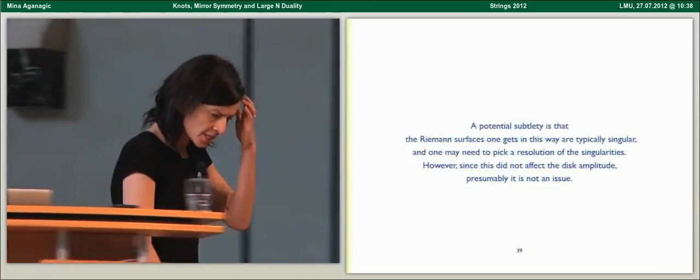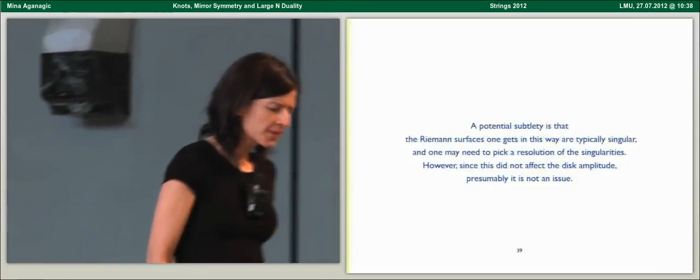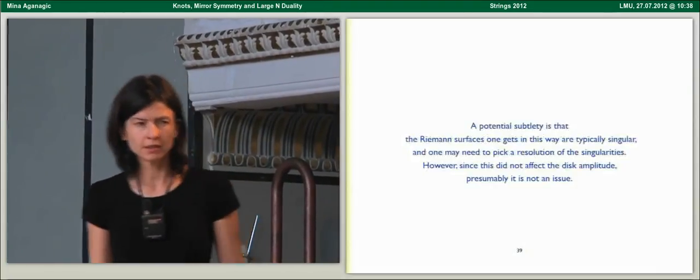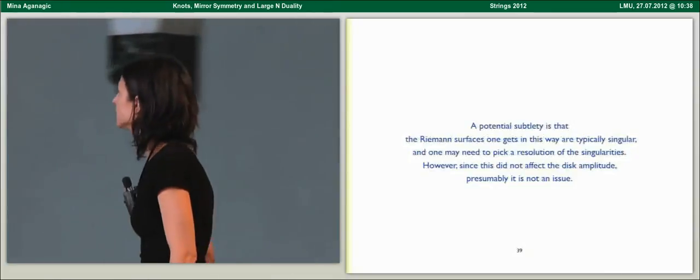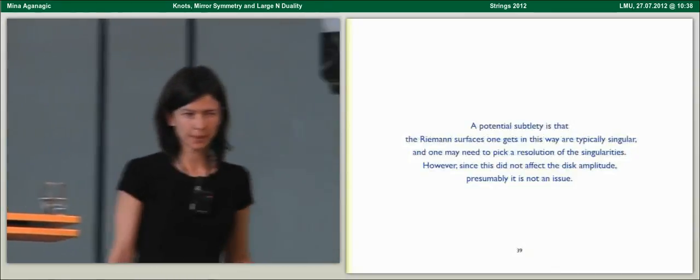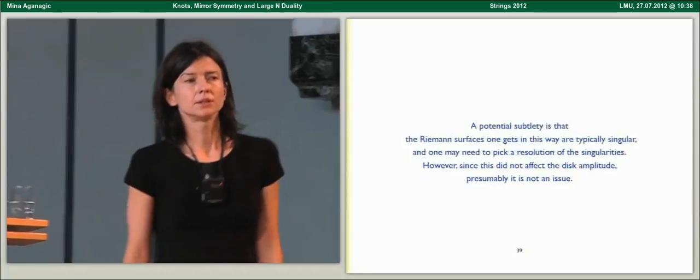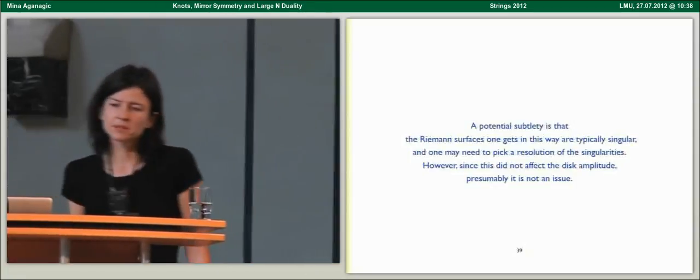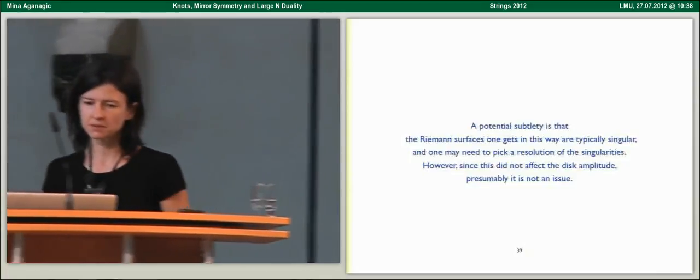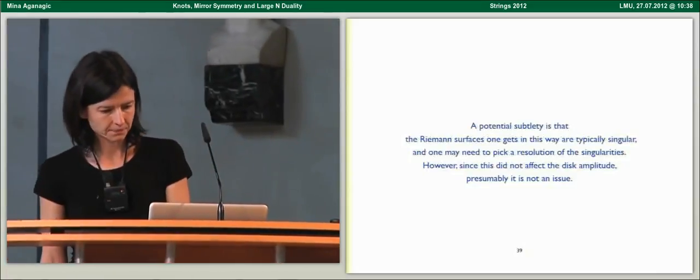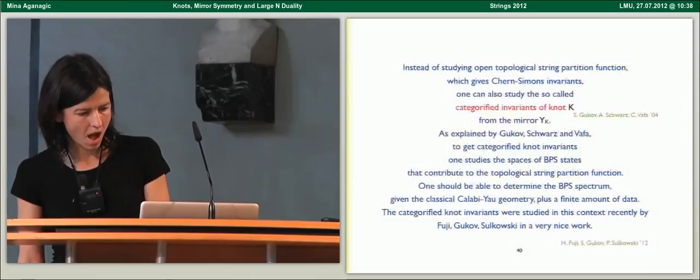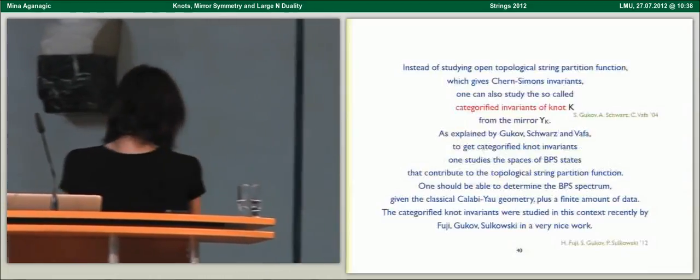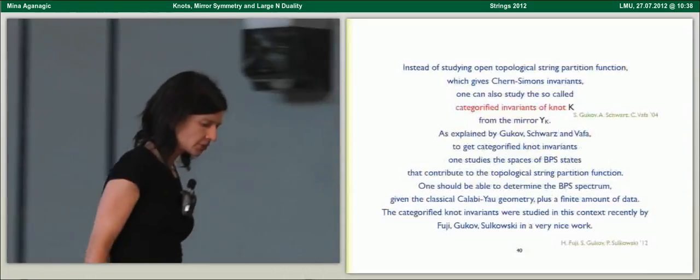There is a potential subtlety related to the fact that Riemann surfaces that you get in this way are actually all singular, except in the case of the unknot. One might have to pick a resolution of singularities to define the quantum theory properly. However, presumably, since this didn't affect the disk amplitude, it's not an issue.